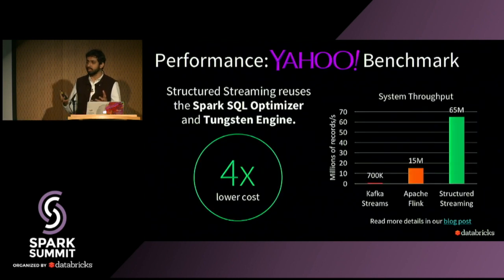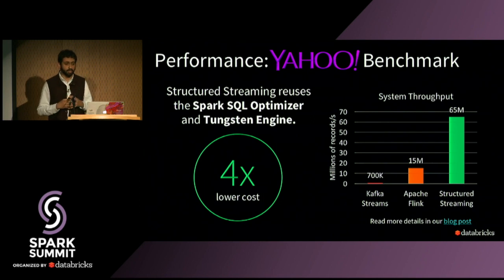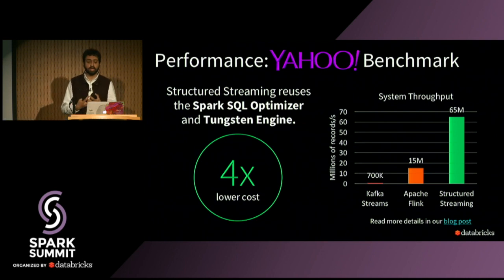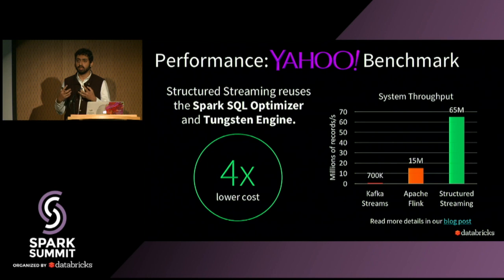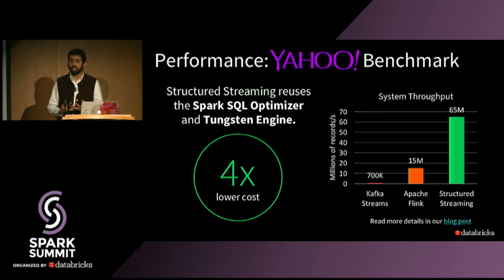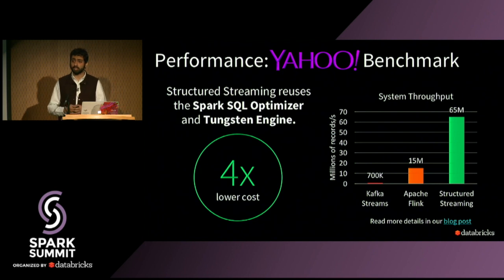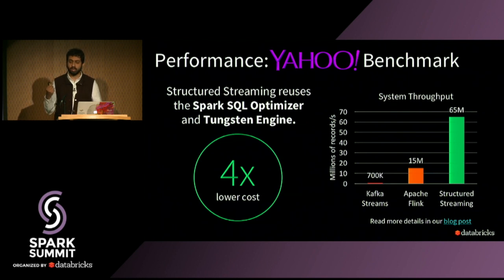Regarding performance, because of all the SQL and Tungsten engine optimizations we've worked on over the last three or four years, we've shown more than 4x higher throughput than Apache Flink in a standardized Yahoo benchmark. 4x faster performance means 4x lower cost and 4x lower chances of failures on spot instances. We've published a blog post on this, and you can reproduce the benchmark yourself by running our published notebooks on our platform.